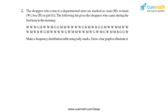Question 2 of this exercise says: the shoppers who come to a departmental store are marked as Man (M), Woman (W), Boy (B), or Girl (G). The following list gives the shoppers who came during the first hour in the morning. We have to make a frequency distribution table using tally marks, and then draw a bar graph to illustrate it.